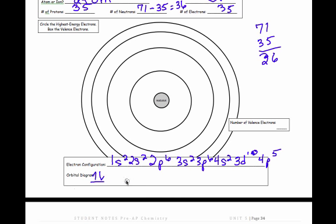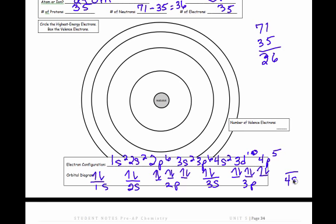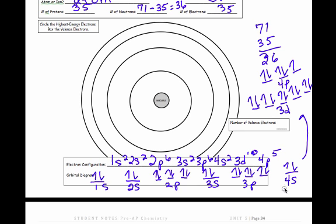I'll do the orbital diagram. So 1s2, and then that's the 2s, and then the 2p with 6 electrons, and then the 3s with 2, and the 3p with 6 electrons. Then the 4s with 2, and then there's the 3d with 10 electrons, and then 5 electrons for my 4p. So that's kind of a messy orbital diagram. Apologize for that.